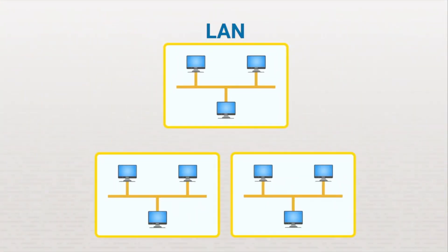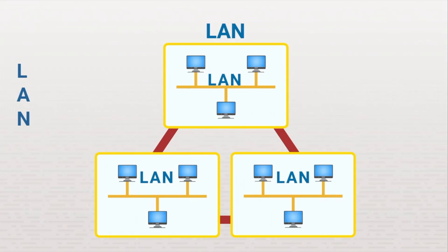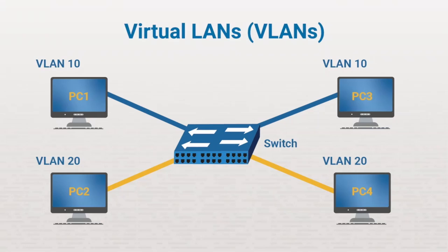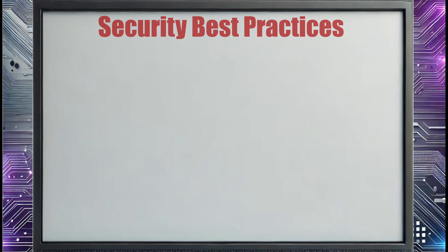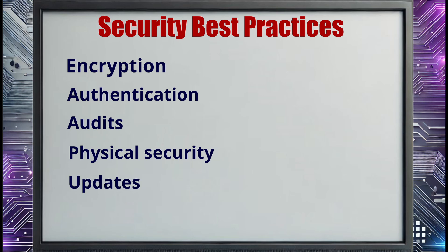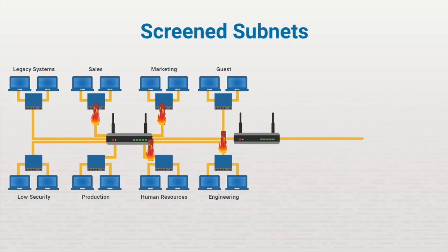You can also use network segmentation to protect your local area network, or LAN, from external threats. Because your LAN connects all the computers at your organization's site, it's worth going through the trouble to keep external threats at bay. And if you use virtual LANs or VLANs, it's especially worth the trouble since you have so many devices logically connected — if something affects one, it'll affect all of them. Let's go into some of the best practices for security: protect your LAN by encrypting information, requiring authentication, auditing regularly, physically securing your network, and keeping hardware and software up to date.